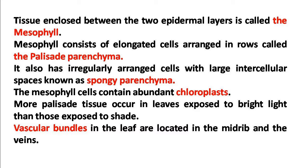Palisade parenchyma is on the upper surface and is directly exposed to light. When we look at the conducting tissues, the vascular bundle of the leaf is in the middle part called the mid rib. There are two conducting tissues in the vascular bundle: xylem and phloem.